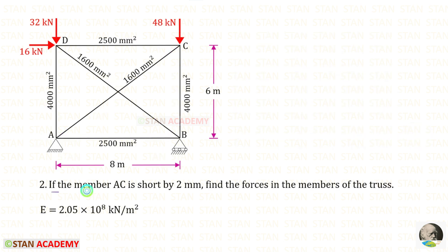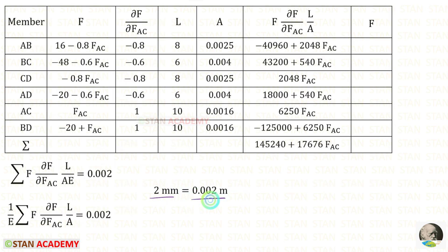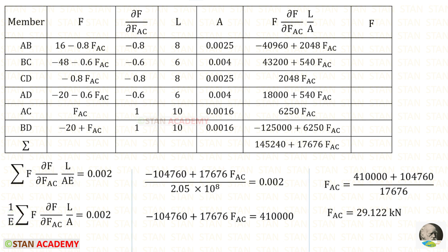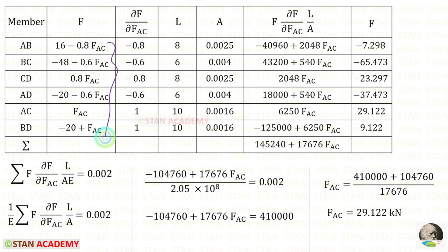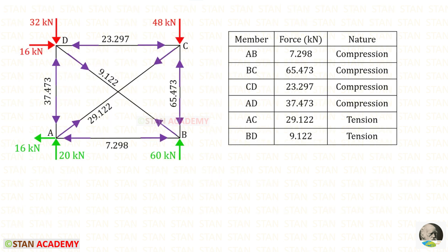Let us do one more problem. If member AC is short by 2 mm, find the forces in the members of the truss. The Young's modulus E is given. Converting 2 mm to meters gives 0.002 m. This is taken as positive because when a member is short it will be under tension. Taking 1/E outside and applying the previously found sum and the given Young's modulus, we solve for FAC. Substituting FAC back gives all member forces, which are entered in the truss.